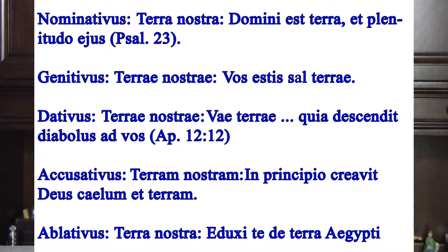Dativus: Ve terre. This is taken from the book of Apocalypse, chapter 12 — 'Woe to the earth.' So 'to the earth' is terre, in the dativus.